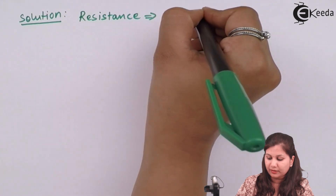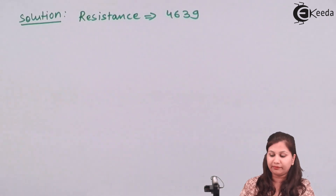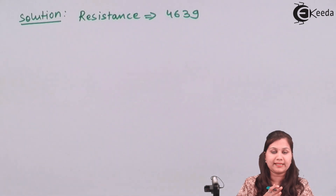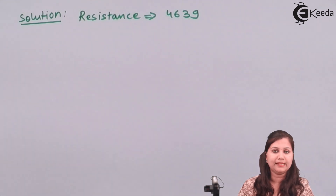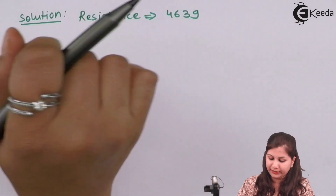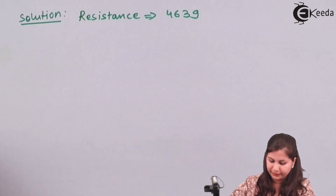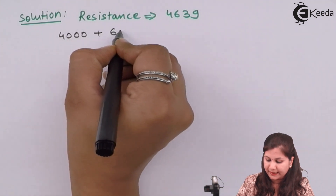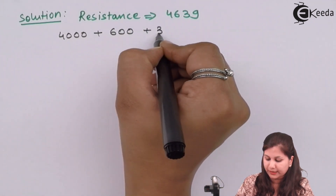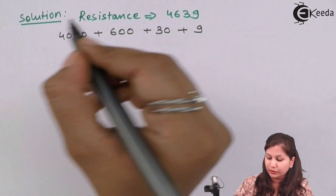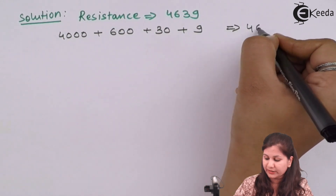The dial box is reading the value 4639. This dial box has four decades: decade A, B, C, and D. If we split this value, it can be written as 4000 + 600 + 30 + 9, which equals 4639.